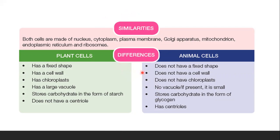For differences: plant cells have a fixed shape because they have a cell wall, while animal cells do not have a cell wall. The function of the cell wall is to maintain the rigid shape of a plant. Plant cells also have chloroplasts because they undergo photosynthesis, while animal cells do not have chloroplasts. Plant cells have a large vacuole, while animal cells have only a small vacuole or no vacuole at all.